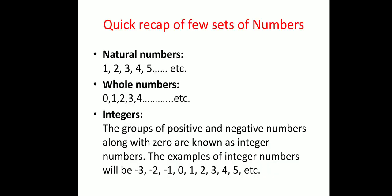Before moving directly to rational numbers, let us have a quick recap of a few sets of numbers. Though you have studied these in previous classes, to understand this chapter properly we need this recap. Let us begin with the very first set: natural numbers. Counting numbers starting from 1, 2, 3 till infinity are known as natural numbers.